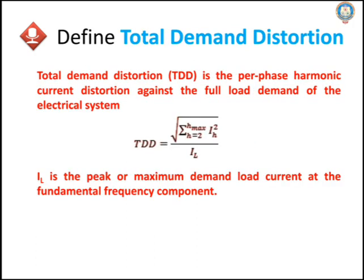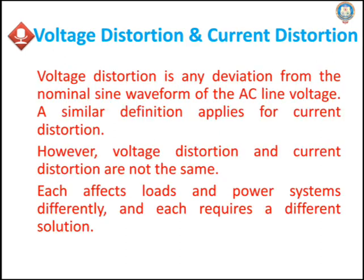Define Total Demand Distortion. Total Demand Distortion (TDD) is a per-phase harmonic current distortion against the full load demand of the electrical system. TDD = √(Σ from h=2 to h_max of Ih²) / IL, where IL is the peak or maximum demand load current at the fundamental frequency component.